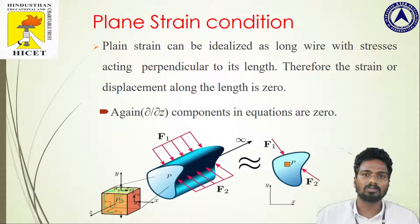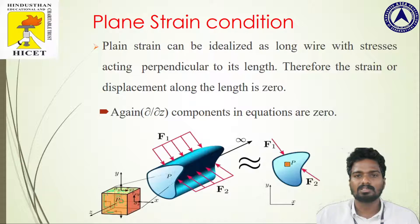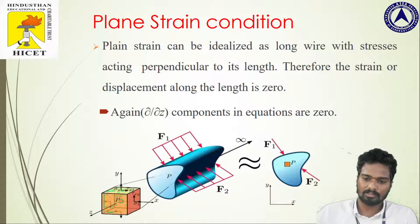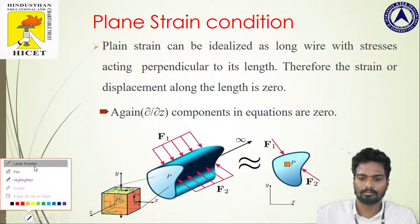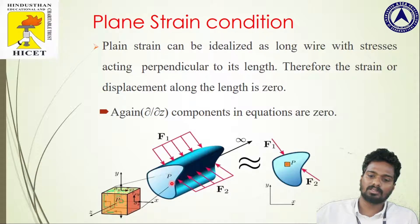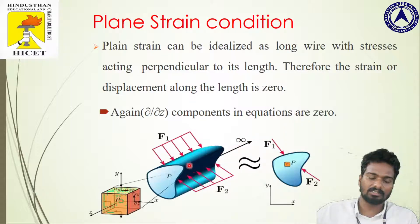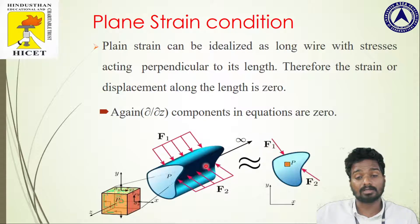Comparing 3 millimeters to a thousand meters of wire is very much negligible, so such problems can be treated as plane strain condition problems. As seen in the diagram, the x and y directions form the plane, while the z direction is infinite or very long. The strain developed in the z direction is considered very negligible due to the infinite length of the object.